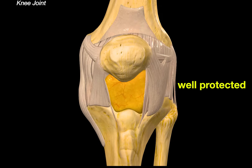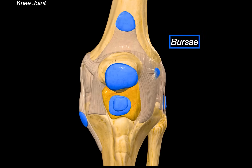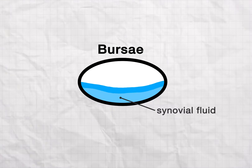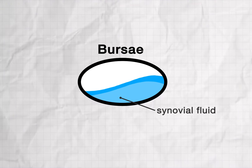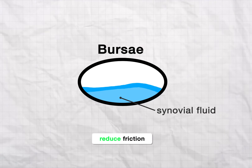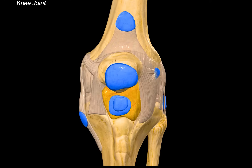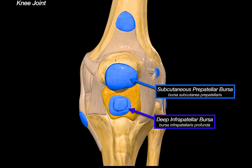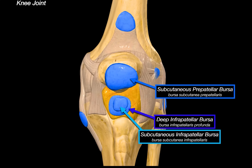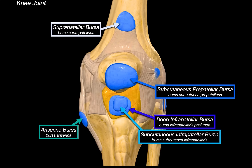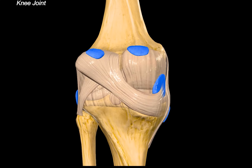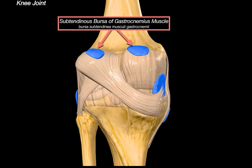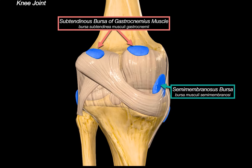The knee is so well protected. In addition to all of this, it has extra cushioning structures called bursae — small sacs filled with synovial fluid that act as pillows, reducing friction and preventing tissue from rubbing against each other. Some of the most important ones are the subcutaneous prepatellar bursa, deep infrapatellar bursa, subcutaneous infrapatellar bursa, anserine bursa, and the suprapatellar bursa. From the backside of the knee, we can also see the subtendinous bursa of the gastrocnemius and the semimembranosus bursa.